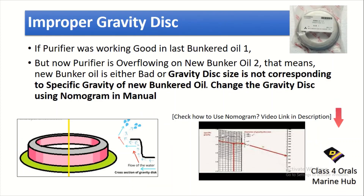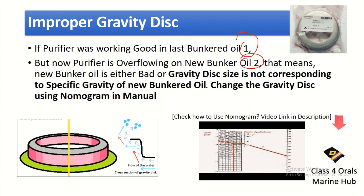The first reason for purifier overflowing is an improper gravity disk. If the improper gravity disk is fitted, then overflow will happen. Suppose the purifier was working fine with the last bunker oil number 1, but now we have taken new bunker oil number 2. If the purifier is overflowing, that means the new bunker oil's specific gravity does not correspond to the current gravity disk size. Change the gravity disk using the nomogram. I have made a video on how to use the nomogram — the link is in the description.